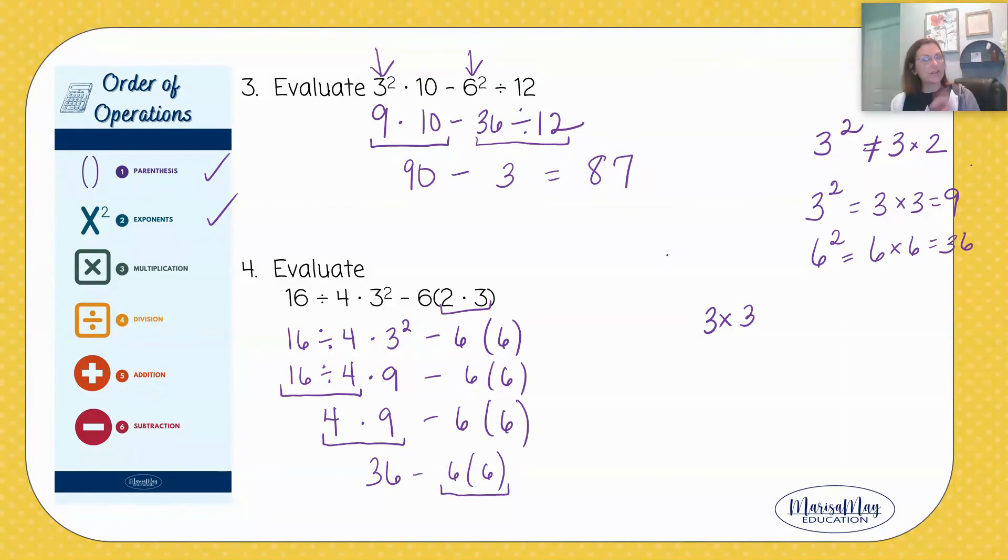Now I don't have an operation written right there. I don't have an add, subtract, multiply, or divide written there. It is understood to be multiply when a number is written in front of, or when an expression is written in front of a parenthesis. It's understood to be multiplied, so this really means 6 times 6. And 6 times 6 we know is 36. And nice for us, now we just have the subtraction and we get zero.